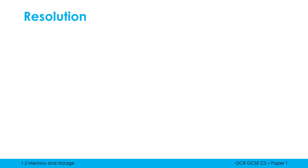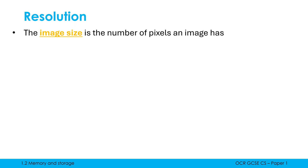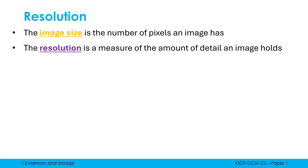Resolution is one of the big terms in this topic. Alongside resolution is the image size, and we have to be careful with the word 'size' in computer science because we have image size and file size — they are two different things. The image size is the number of pixels an image has, and this is very closely tied to resolution. At GCSE they are essentially interchangeable. The resolution is a measure of the amount of detail an image holds — higher resolution means more detail, which you'll be familiar with from YouTube, where 4K is more detailed than lower resolutions.